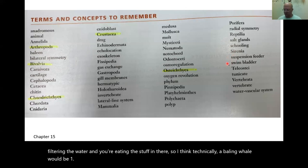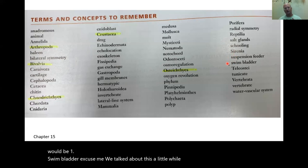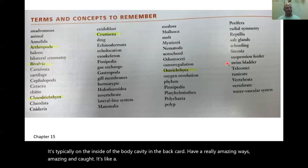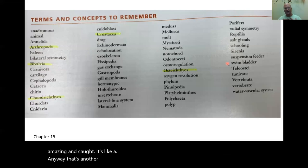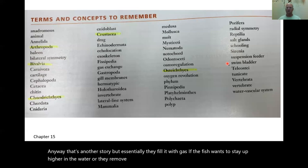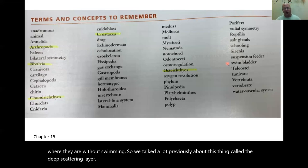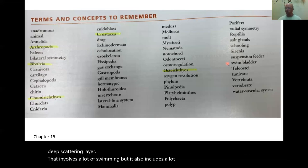Swim bladder is a specific organ in many bony fish, filled with gas and typically located inside the body cavity. Fish fill it with gas if they want to stay higher in the water, or remove gas if they want to go lower — it allows fish to control their depth without swimming. We talked about the deep scattering layer, which involves swim bladders as a way to stay buoyant.